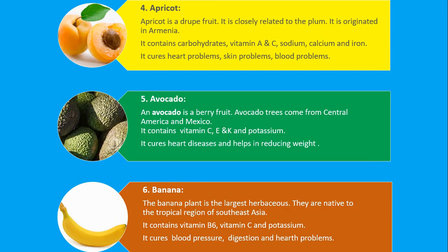Number 4. Apricot. Apricot is a drupe fruit. It is closely related to the plum. It is originated in Armenia. It contains carbohydrates, vitamin A and C, sodium, calcium and iron. It cures heart problems, skin problems, blood problems.